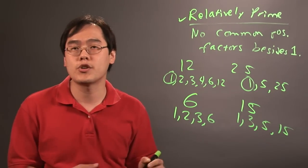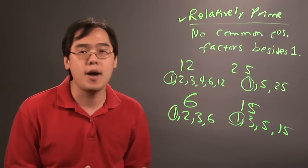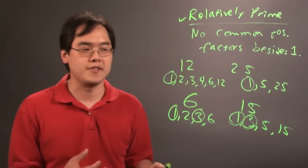This is an example of two numbers that are not relatively prime because, yes, they have the number 1 in common as a factor, but if you notice, they also have the number 3 in common as a factor.